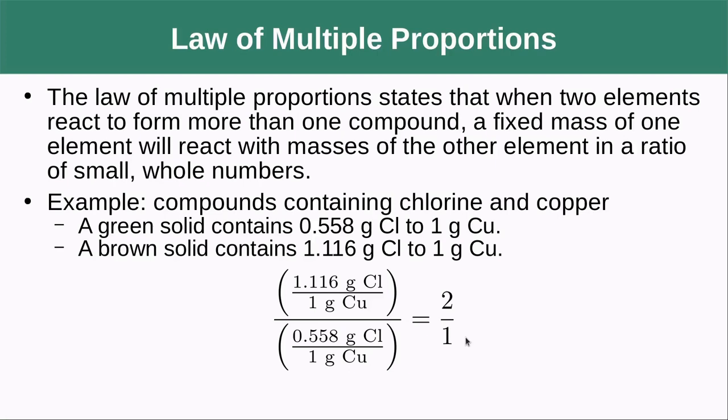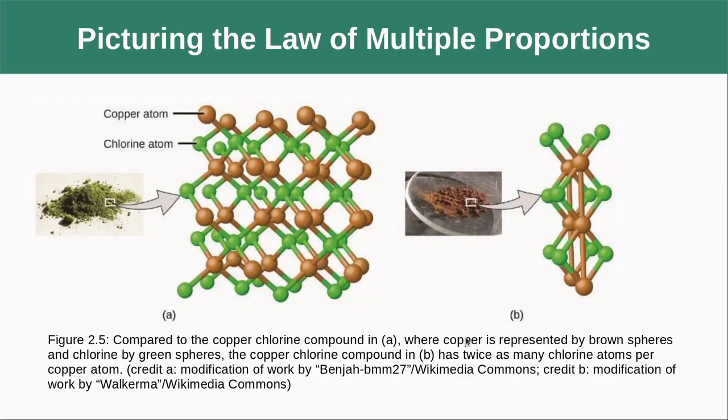We can picture that here where we can see there are roughly two chlorines for every one copper, whereas over here we have twice as many chlorines as we did on the left.